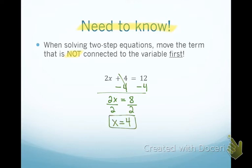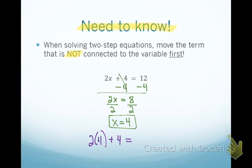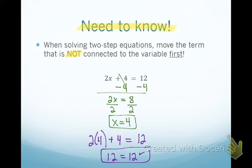We check the answer the same way we checked one-step equations. Your homework will say to check the solution — take your value for x and plug it back into the original equation. Is it true that 2 times 4 plus 4 equals 12? I just want to see the substitution back into the original equation and that your solutions check out. 12 equals 12 — it checks out. On your homework, I want to see a boxed answer and a boxed checked answer.